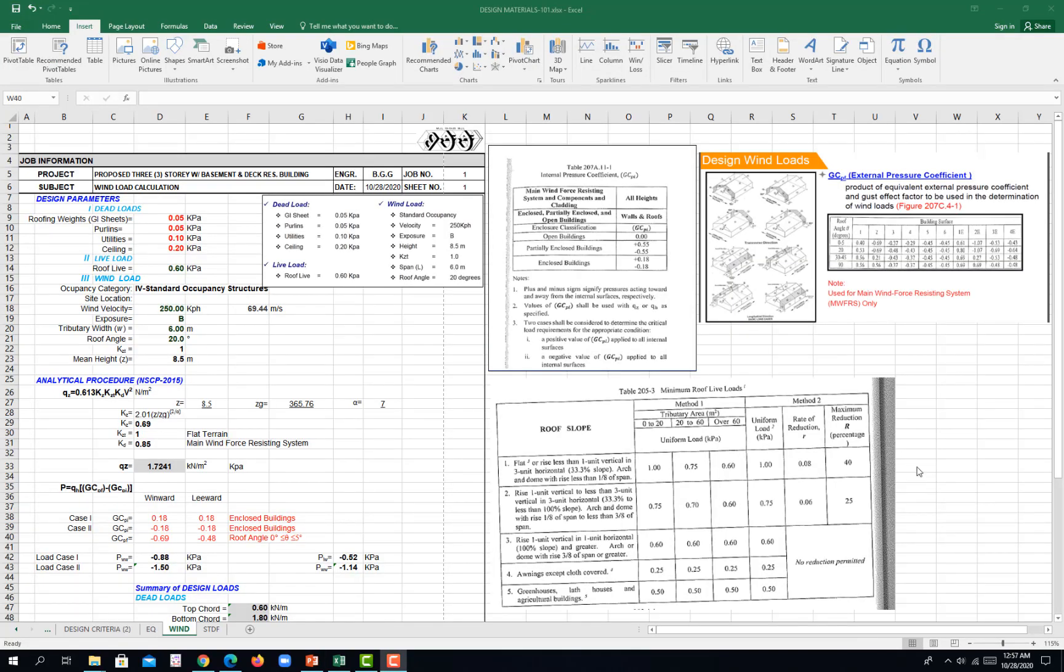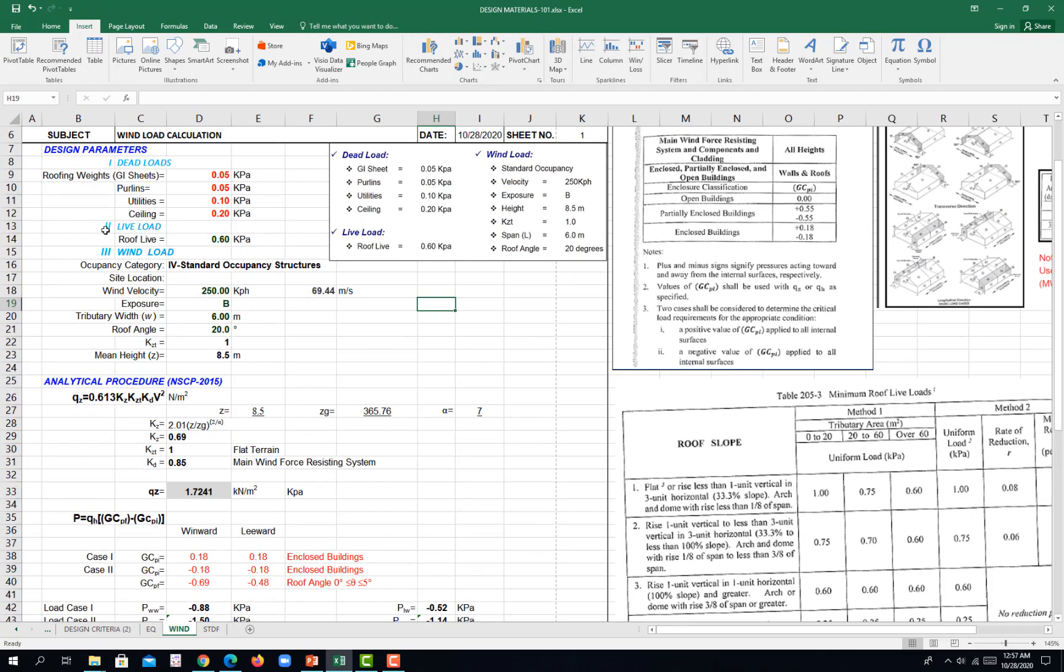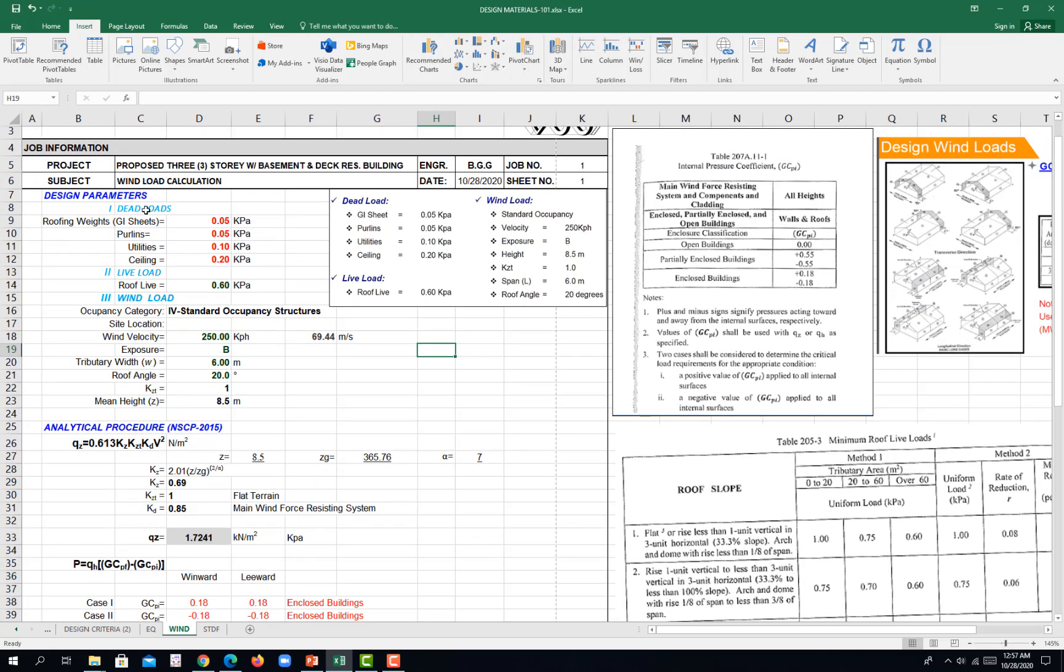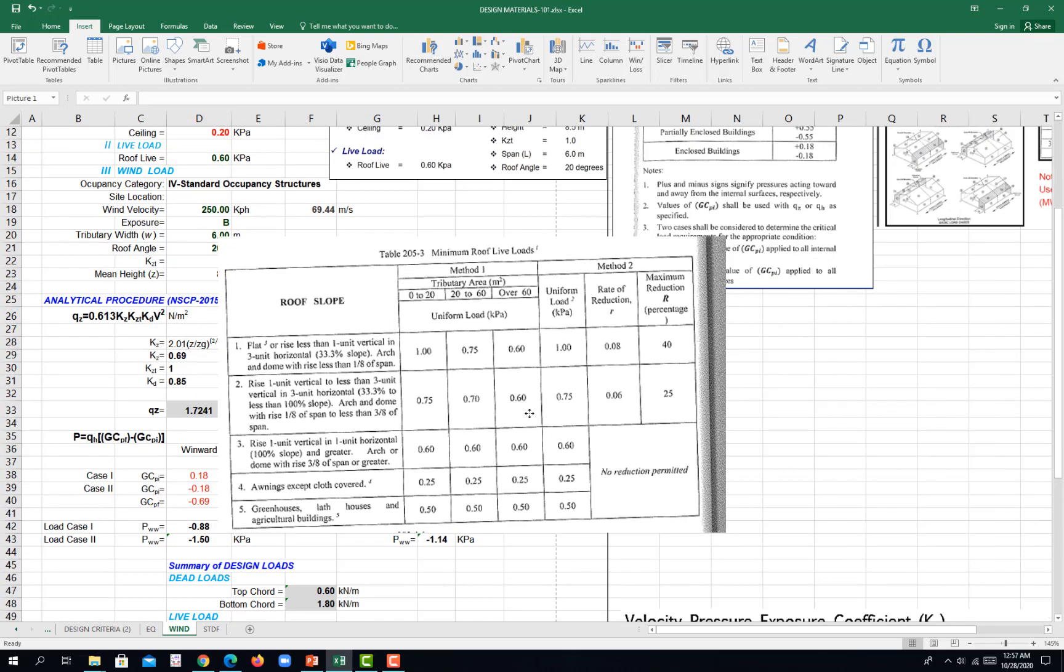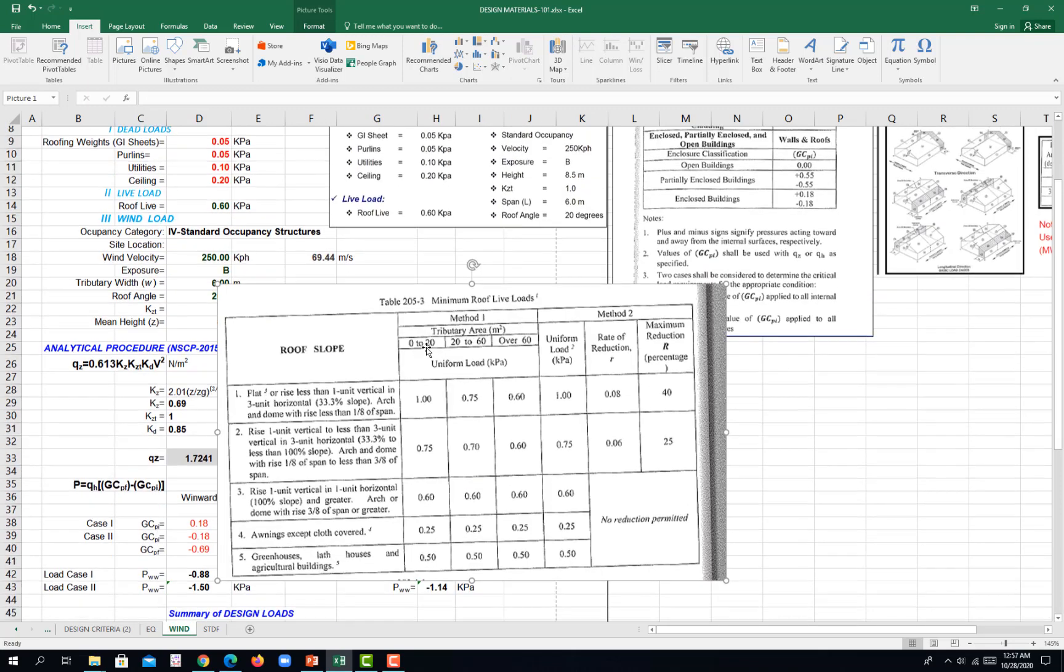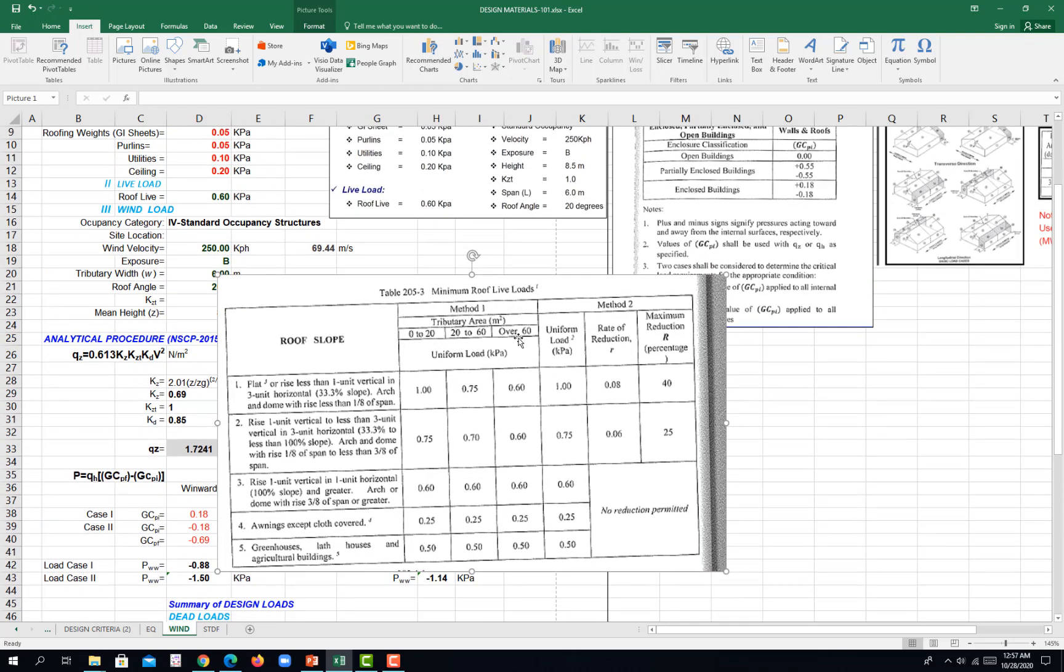So we will be designing this truss, this geometric truss that we have here. A 2 meter height and then 1 meter spacing on our web members, the vertical members. So let's go to the calculation of our loadings based on our design parameters. I listed it here.